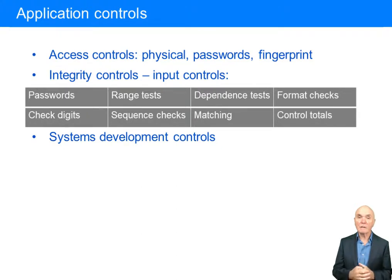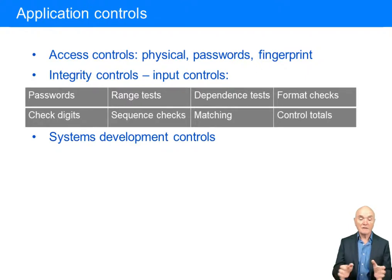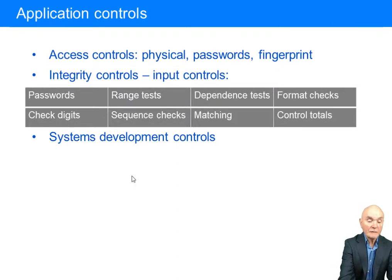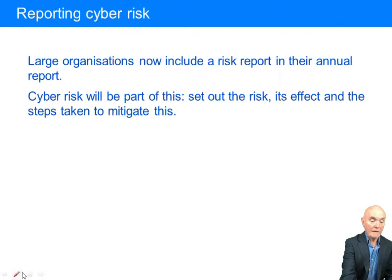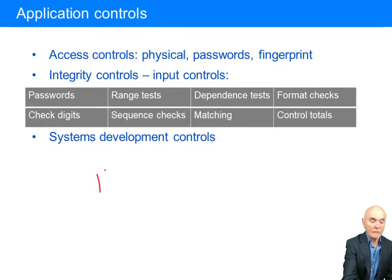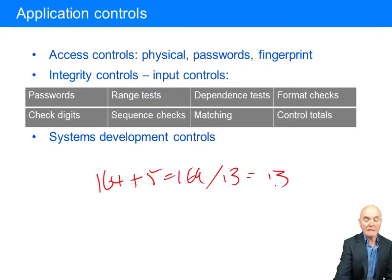Integrity controls: how do we know that the data being put in and updated to files is correct? Passwords can help, but you can have a range of controls. For example, check digits — if you wanted to put in the number 164, there'd be a check digit like 5 so that the actual number was easily and evenly divisible by 13. A very simple kind of check digit.